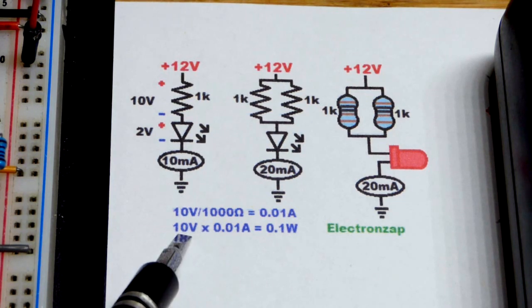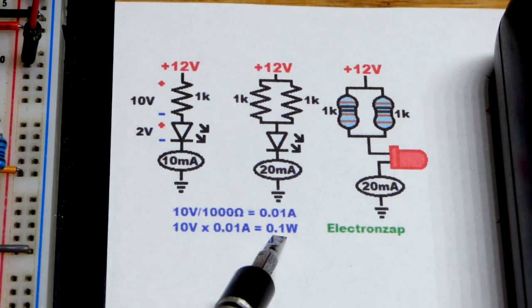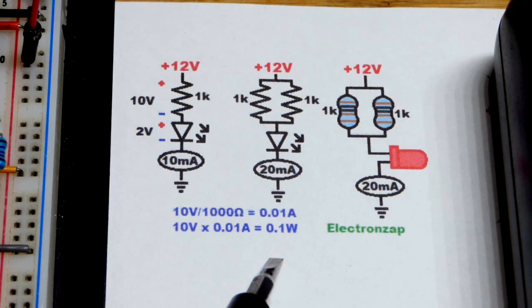Now you take that current and multiply it by the voltage to get the wattage. That's how hot the resistor is going to get, how much heat it has to dissipate, actually. And so we got 0.1 watts.